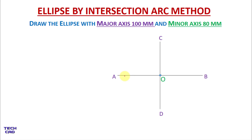Now I will measure A to O, take the compass and mark a distance of AO, and put the compass at point C and mark an arc on the major axis — name it F1, which is the first focus of the ellipse. In the same way, mark an arc on the major axis on the other side and name it F2, which is focus 2. So we have focus 1 and focus 2 on the major axis.